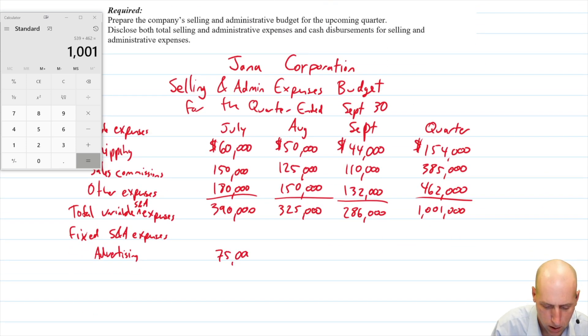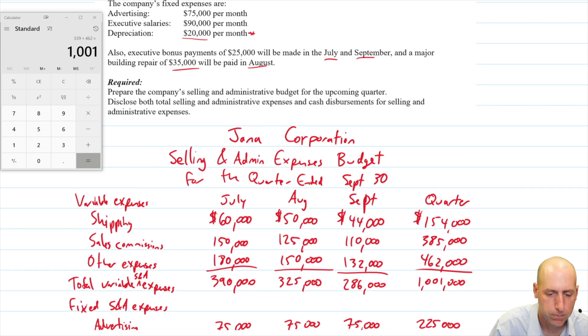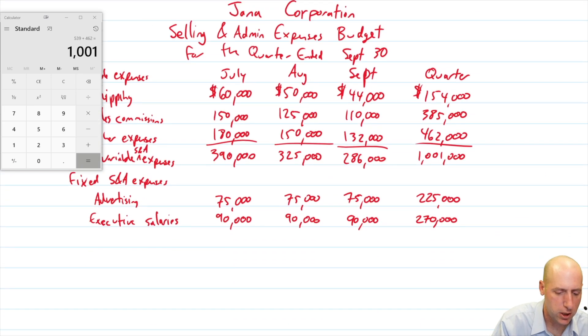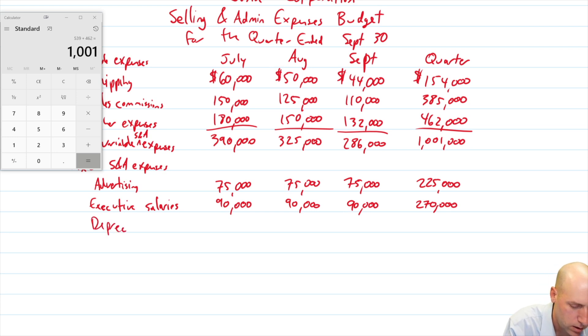Executive salaries, 90. Executives always pay themselves a lot of money. 90, 90, 90, and 270. And last, depreciation. 20, 20, 20, and you add those together and you get 60.